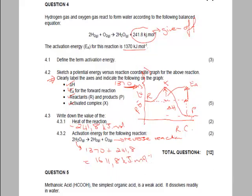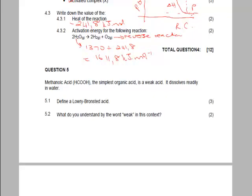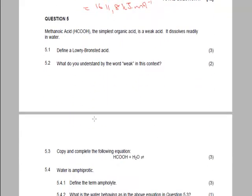Okay. Now let's look at question five, the last question on the test. It says, methanoic acid, HCOOH, is the simplest organic acid, is a weak acid. It dissolves readily in water. It says, define a Lowry-Bronsted acid. So the whole thing is to know what an acid is, and then secondly, know the definition of the Lowry-Bronsted, which is really just that an acid is a proton donor. It gives away a proton. In other words, it gives away a hydrogen plus ion.